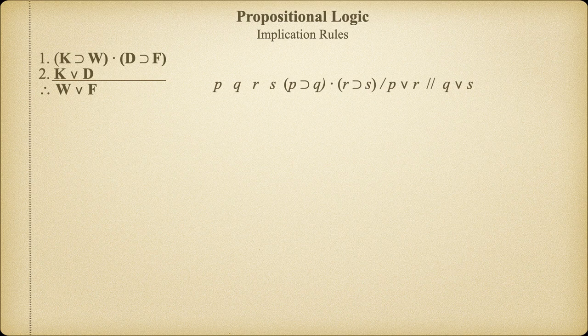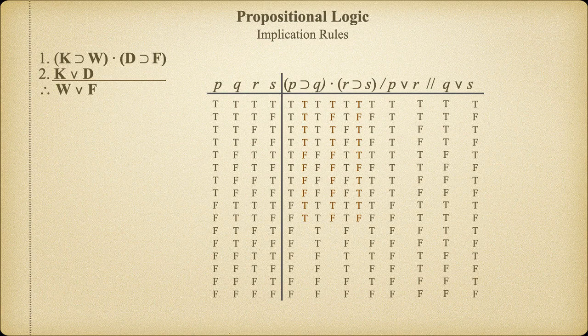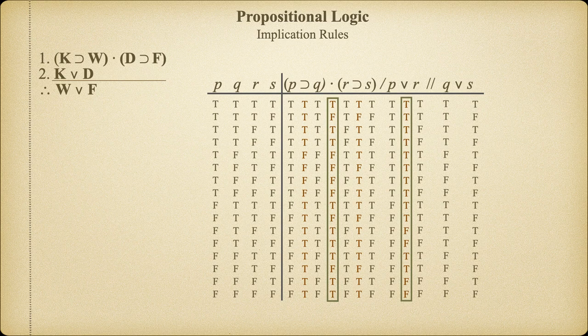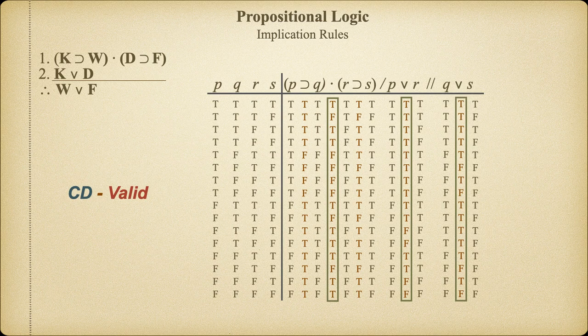Now, once we set up a truth table for constructive dilemma, we'll find that there are, in fact, no cases where the premises are true and the conclusion is false. Given that there are four simple propositions that make up this constructive dilemma, our truth table is rather lengthy, and it takes a while to compute all of the possible truth functions. This, of course, is why we like to use these valid rules of deduction that we have articulated in this section instead of having to perform a truth table for every possible natural language argument. Doing the proofs that we've been learning about is just much faster.